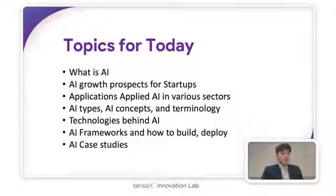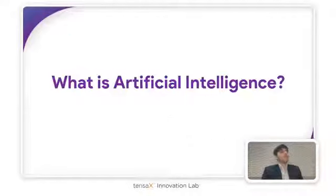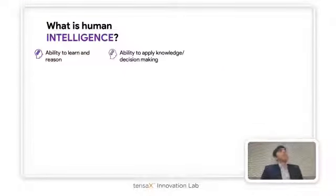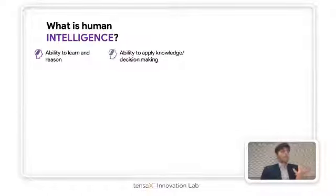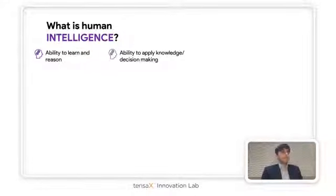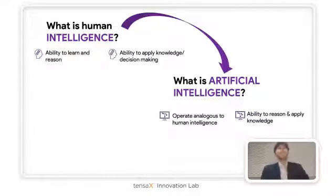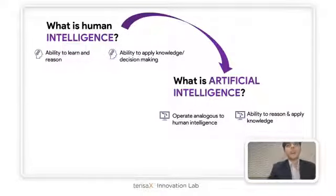Let's start by defining what artificial intelligence is. To do that, let's first define what intelligence is. Intelligence is the ability of an organism or being to understand its environment, make decisions, make sense of its environment — to be aware, to be conscious. Artificial intelligence is the ability of algorithms, machines, and computer systems to perform tasks, take decisions, and mimic human intelligence.